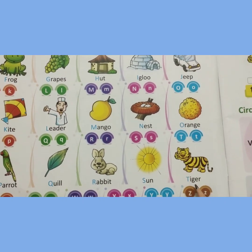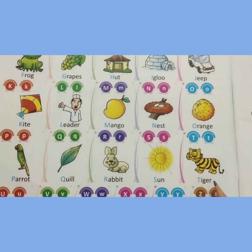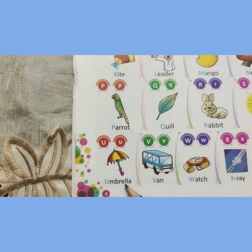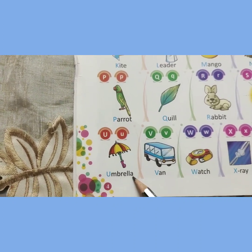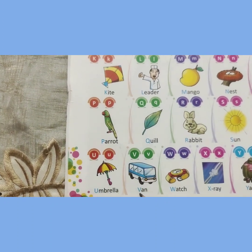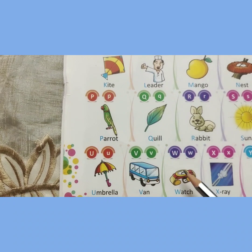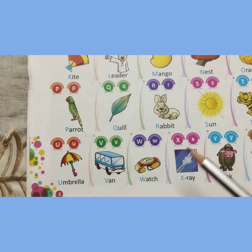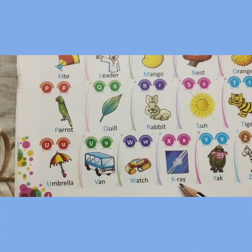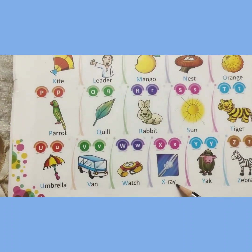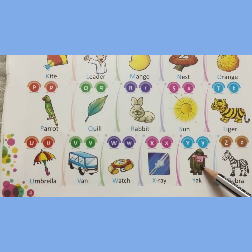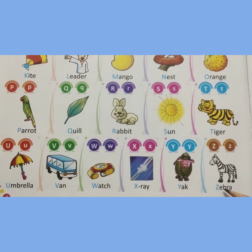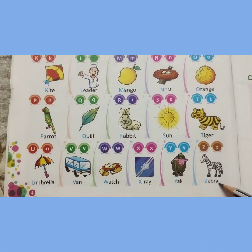T for tiger. T, I, G, E, R. Tiger. U for umbrella. U, M, B, R, E, L, L, A. Umbrella. V for van. V, A, N. Van. W for watch. W, A, T, C, H. Watch. X for x-ray. X, R, A, Y. X-ray. Y for yak. Y, A, K. Yak. Z for zebra. Z, E, B, R, A. Zebra.